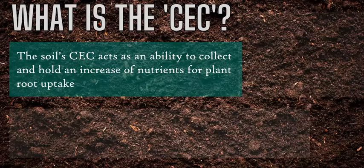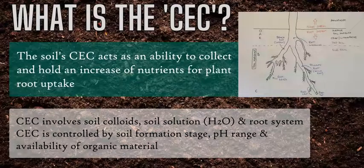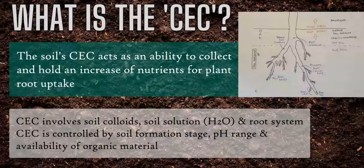The CEC acts as a storage unit, or a pantry, for the roots to selectively choose the cations to be transferred from the colloid directly, or from the soil solution through diffusion or mass flow into the roots as food. This gives plants access to these cations and also acts as a buffer for the pH of the soil.